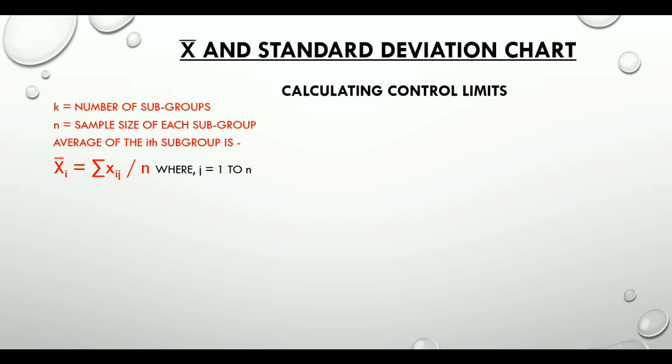When we see Xᵢⱼ, it is the jth item of the ith subgroup. Center line of the X-bar chart is X-double-bar because it is the average of the average calculated from each subgroup.